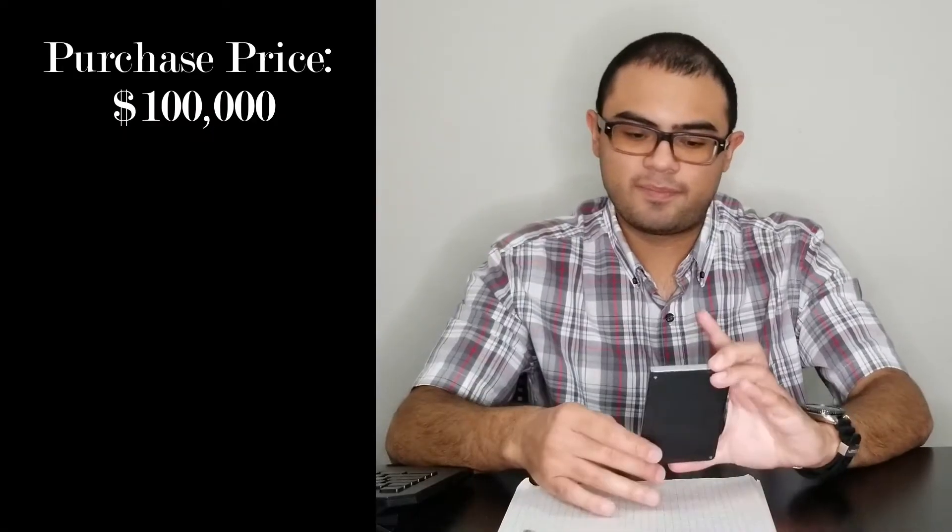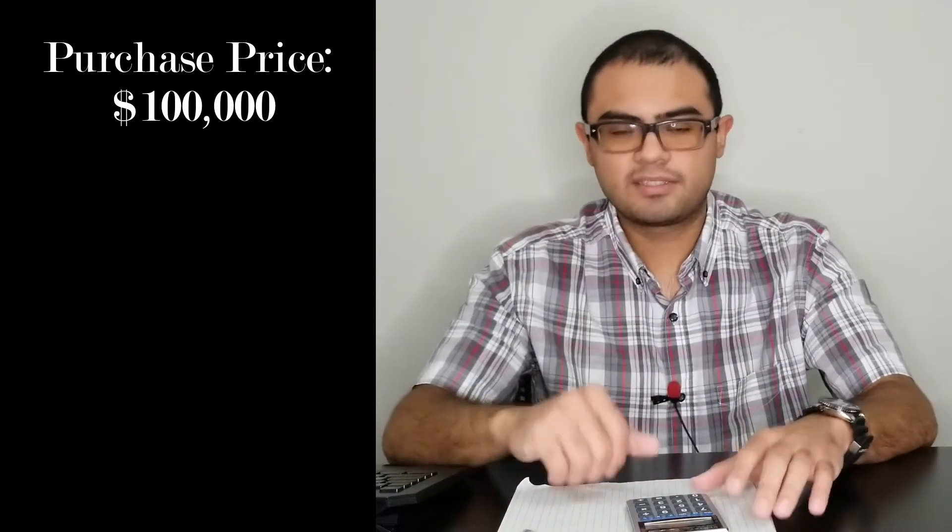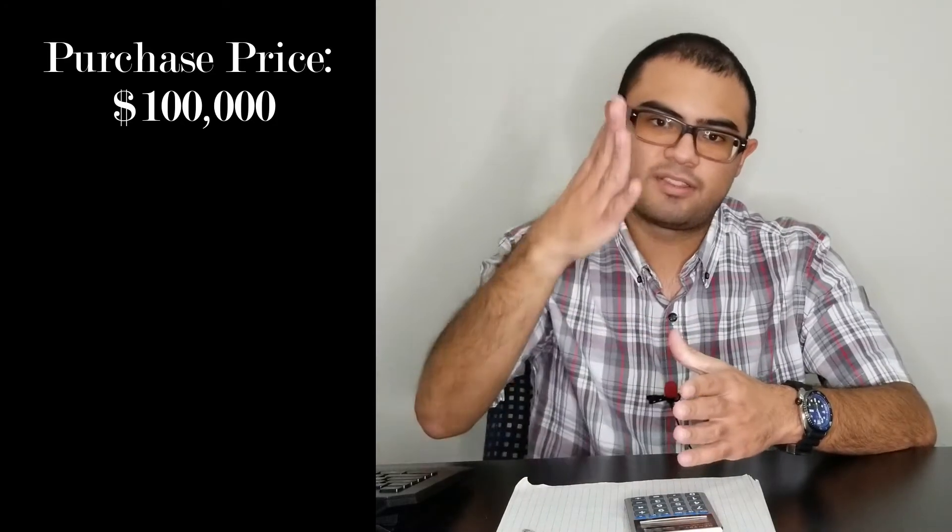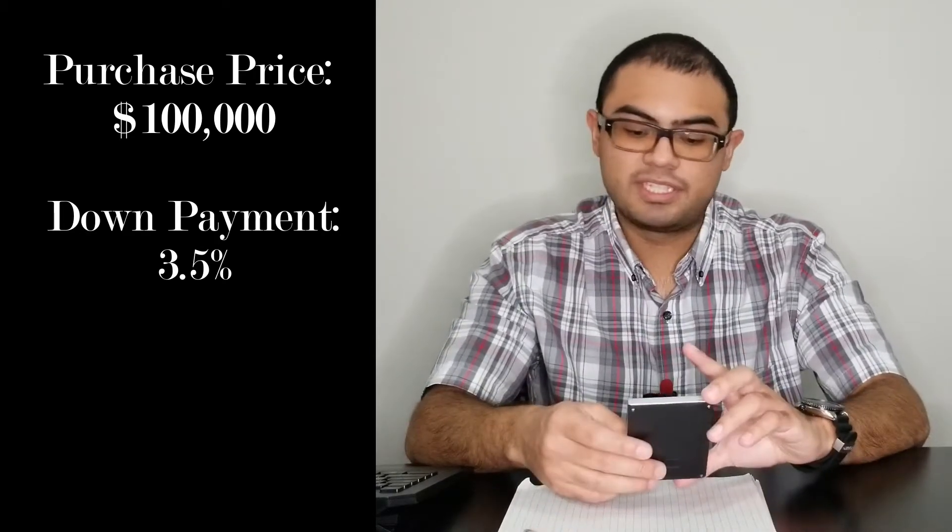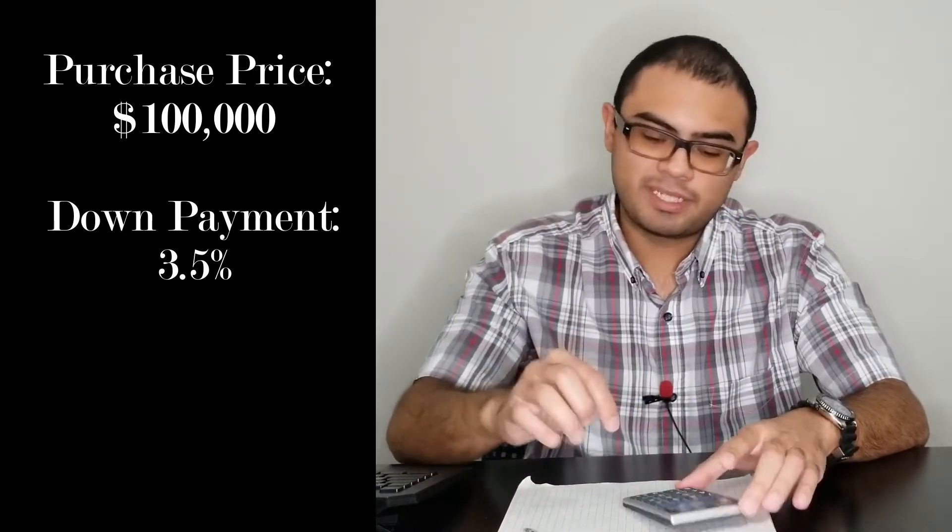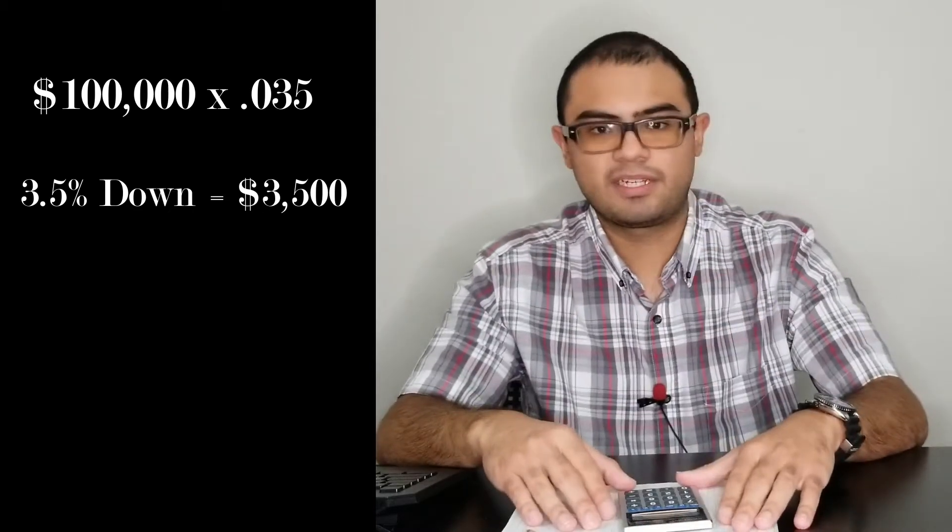If you've got a $100,000 property, and we're going to calculate 3.5% down for an FHA deal, you need to get your calculator, click multiply 0.035, enter. That means you would need to put down potentially $3,500. Pretty straightforward there. Right off the bat, your down payment is going to be $3,500.